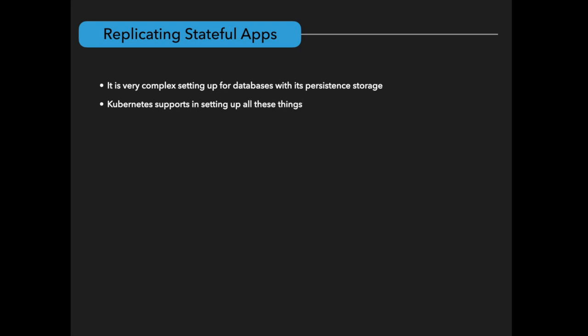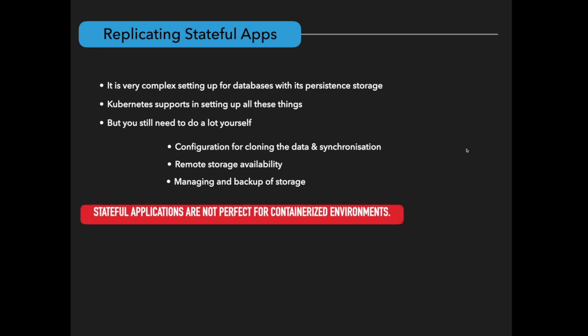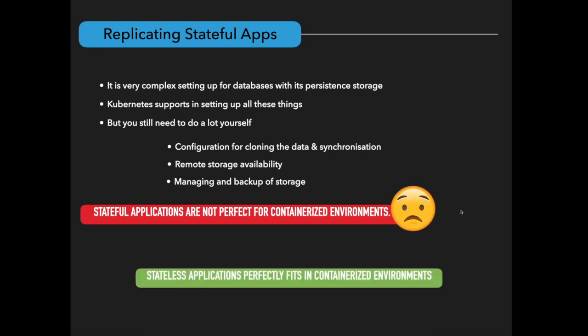Now you understand how complex it is to replicate stateful applications — setting up databases with persistent storage and all. Kubernetes does help you set up these things, but there is still a lot you need to do yourself that Kubernetes doesn't provide out of the box: cloning data during synchronization, configurations for data, remote storage availability, and managing storage backups. Because of this, stateful applications are not perfect candidates for containerized environments. On the other hand, stateless applications fit perfectly in containerized environments because they have no state or data dependency — Kubernetes handles scaling and replication super easily.